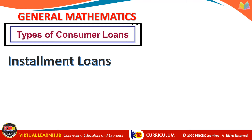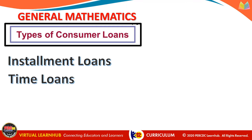The first type of consumer loan is installment loans. This popular type of loan enables borrowers to acquire an item such as a house, an automobile, or an appliance and pay for it over a period of months or years. Installment loans are repaid at regular intervals, usually monthly, and each payment includes a portion of the principal amount and some interest. While the loan is being repaid, the lender retains a security interest — meaning ownership — in the item being financed.